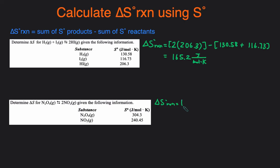The products: we have 2 NO2 times the value of NO2, which is 240.45, minus the sum of the reactants, which is just N2O4, which is 304.3.